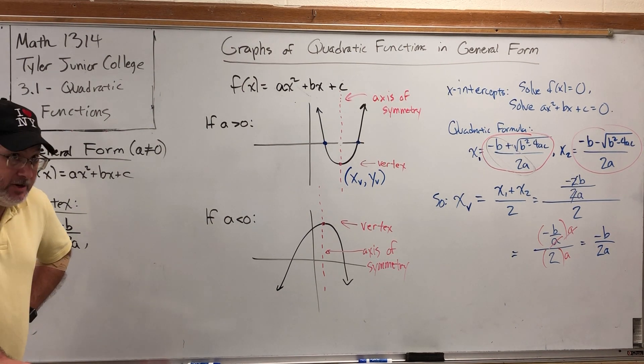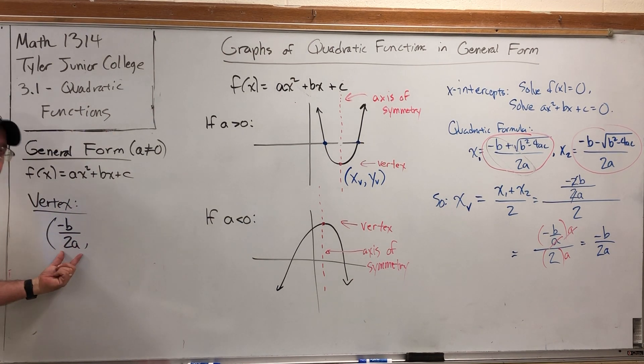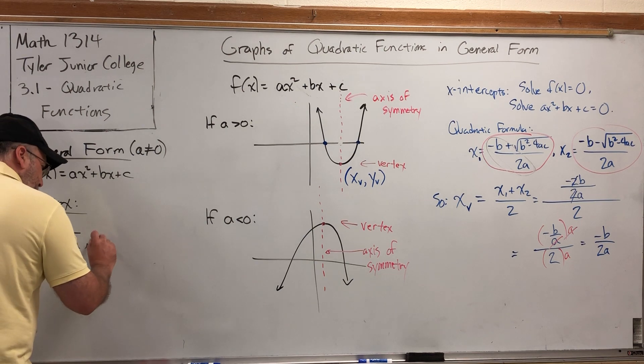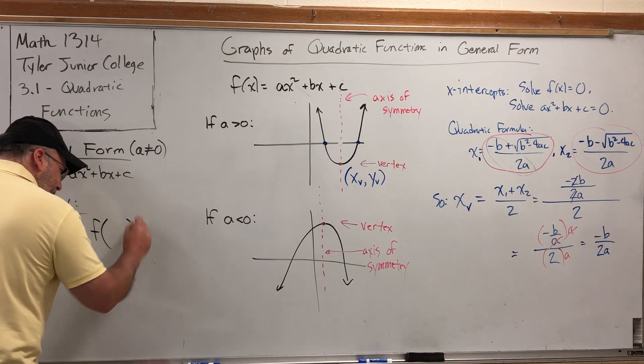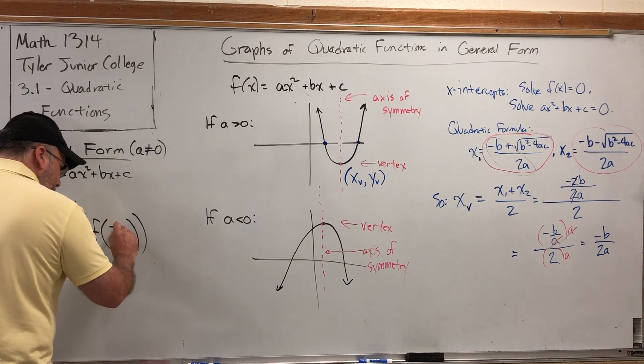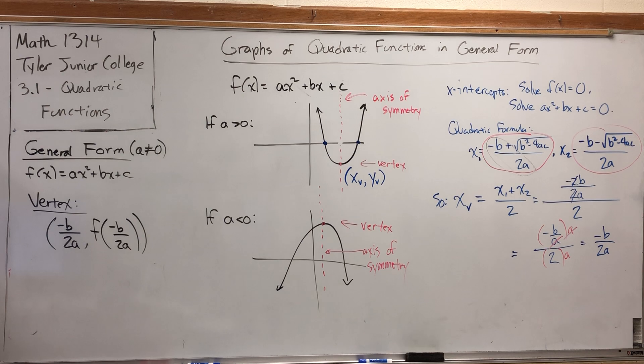This is even easier to think about. I have a function and an x—how do you get a y when you have a function and an x? Answer: plug the x into the function. So the plan is to take whatever you get here, which is -b/2a, and substitute it into the function. The result will be the y-coordinate.